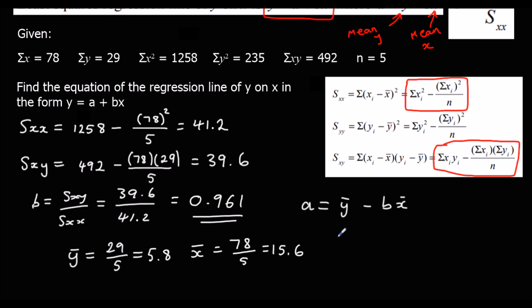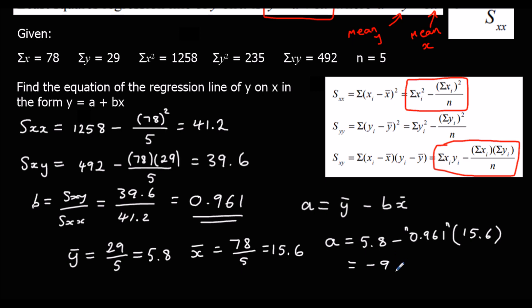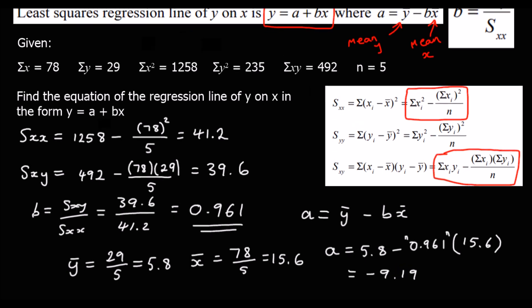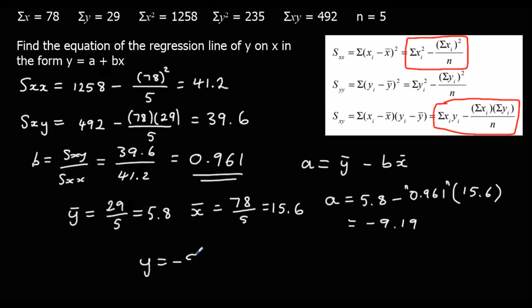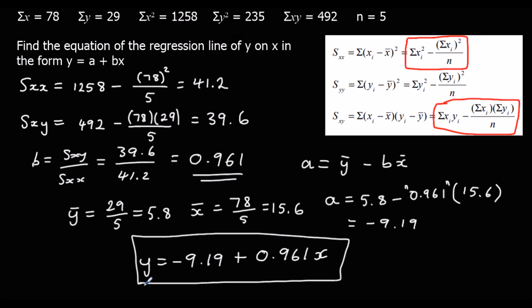So that means our a is equal to ȳ (5.8) minus our b (0.961) times x̄ (15.6). Typing that into the calculator using the exact stored number, we get to three significant figures: minus 9.19. So the equation of our line of best fit is y equals negative 9.19 plus 0.961x.